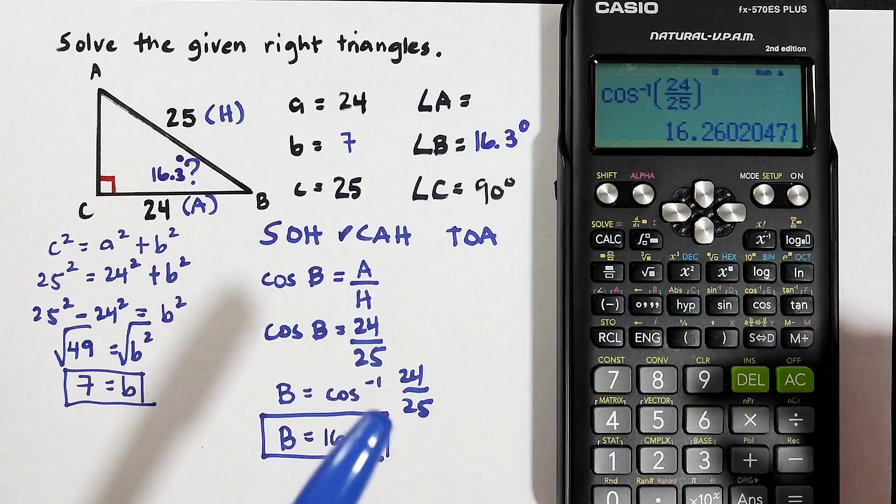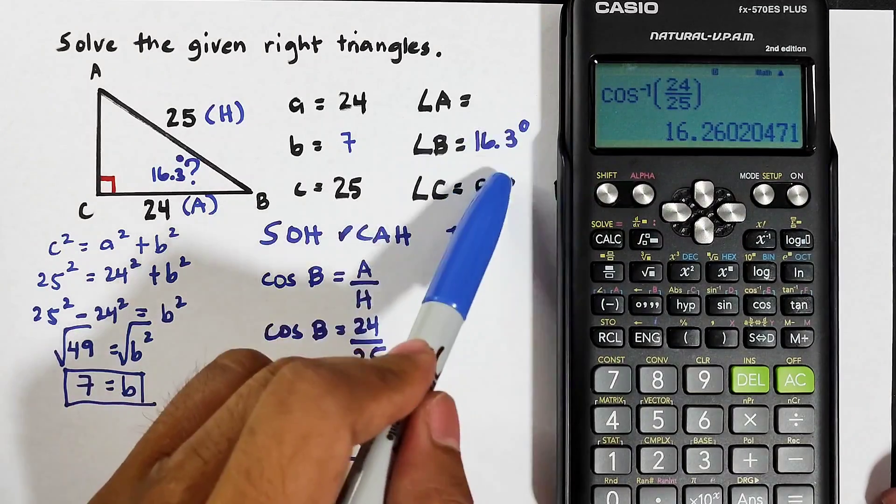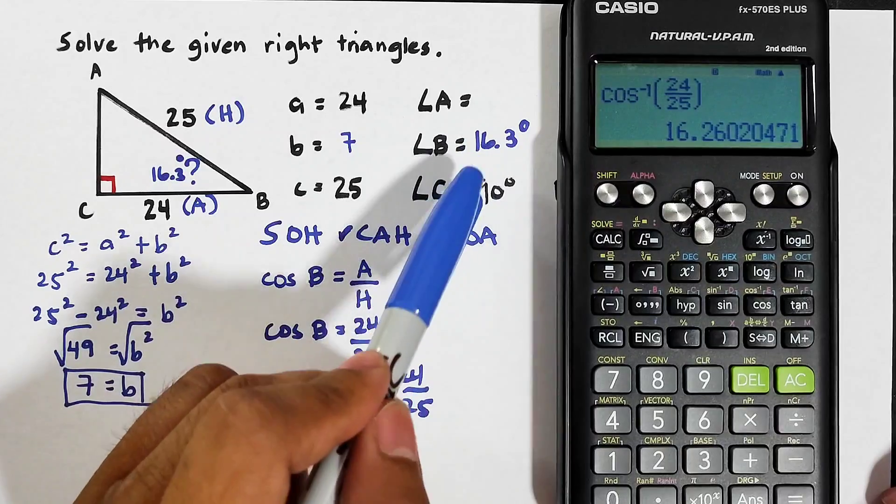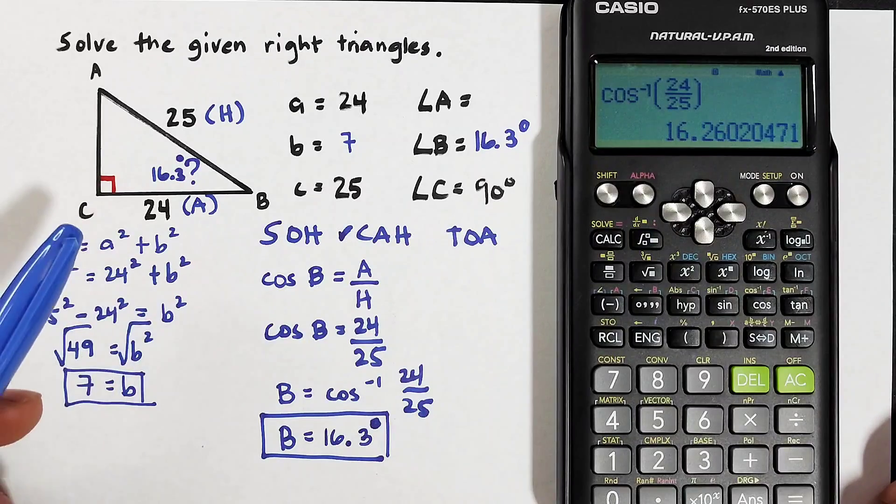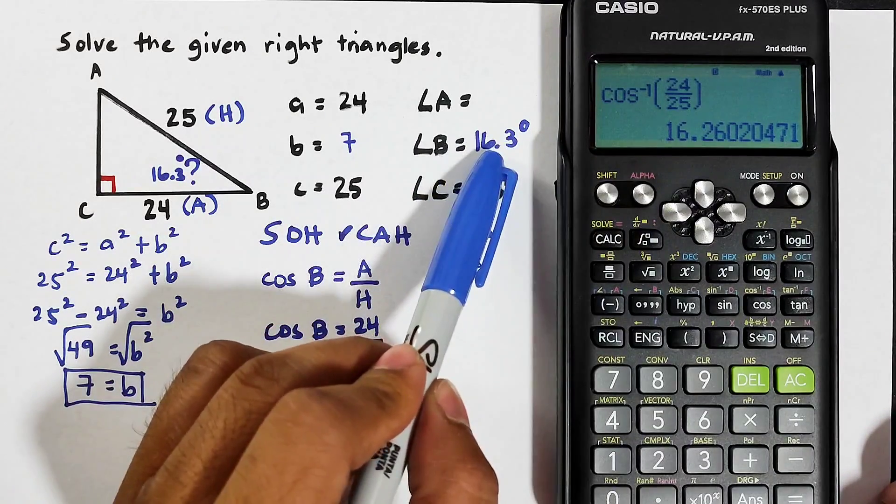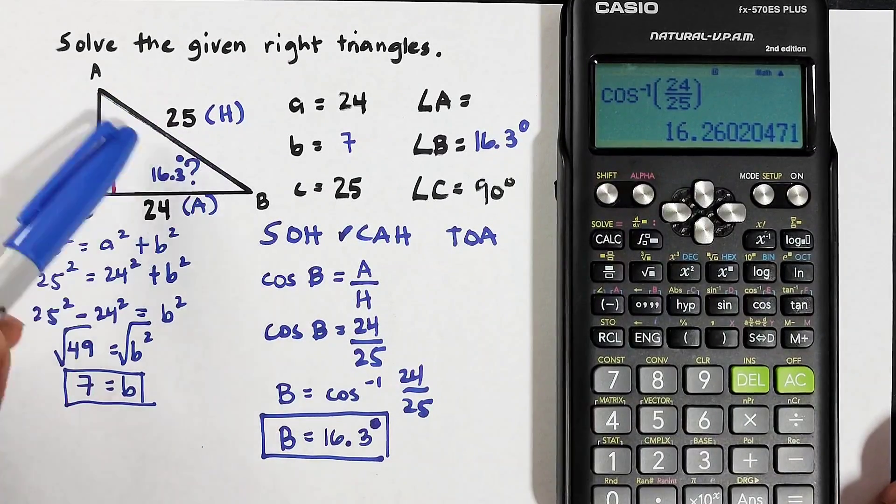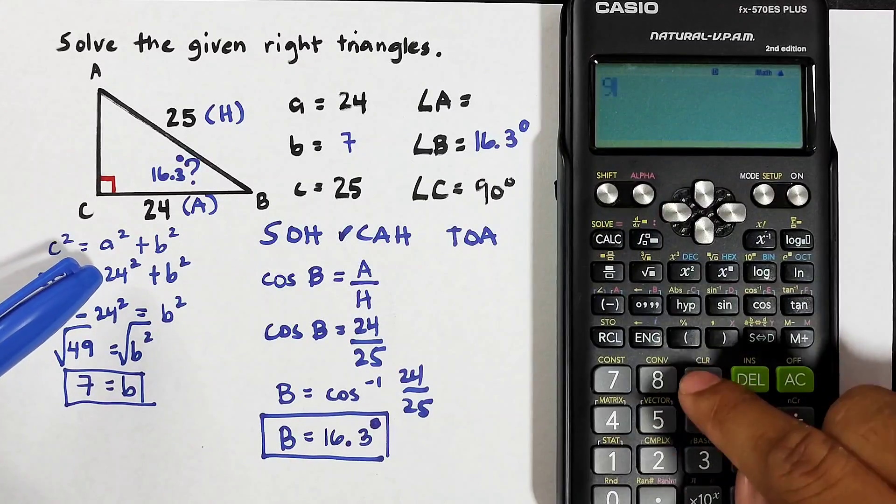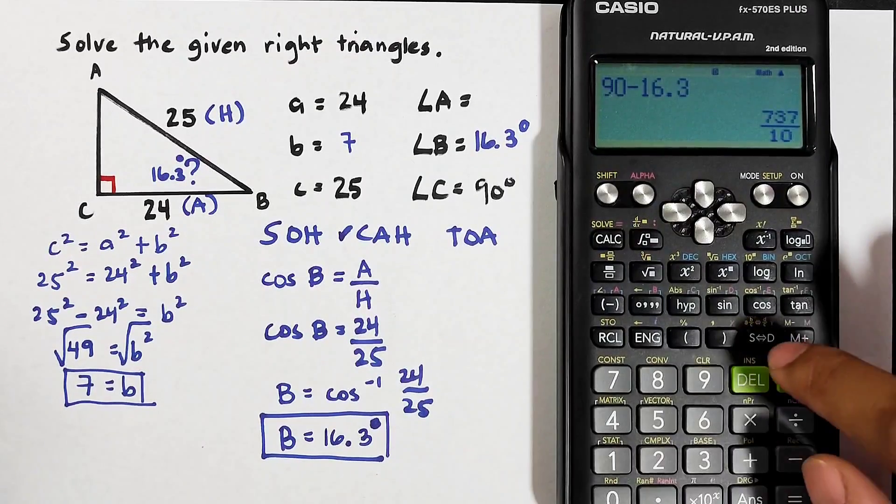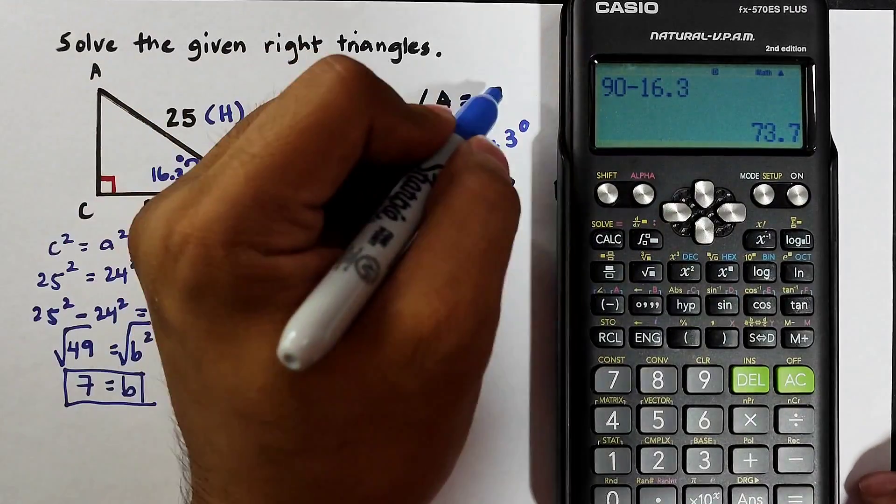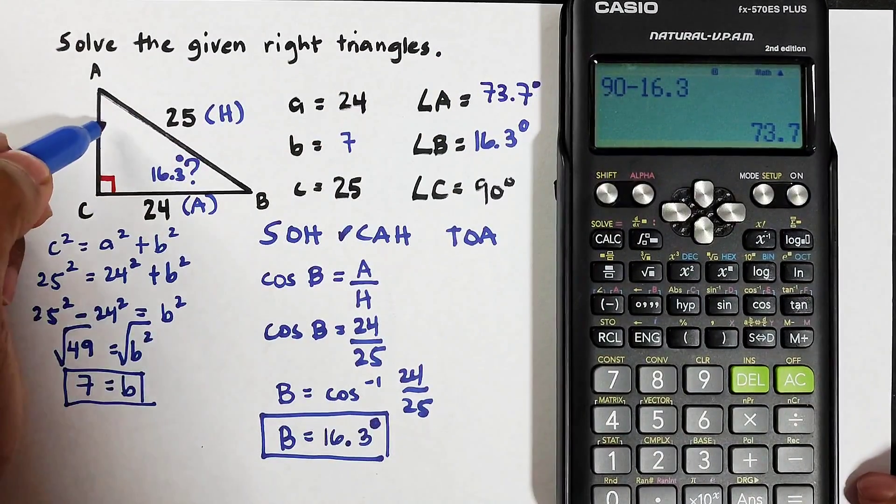So normally what we are doing is that we are subtracting the two angles from 180, but that's a hassle. What you need to do is to subtract this angle from 90 degrees. Because always remember if this is already 90 degrees, meaning these two angles are complementary. So try 90 minus 16.3 degrees. The answer is 73.7 degrees and that's it guys.